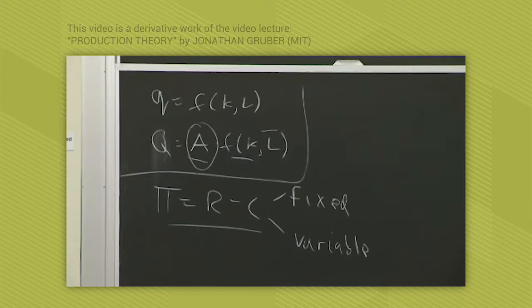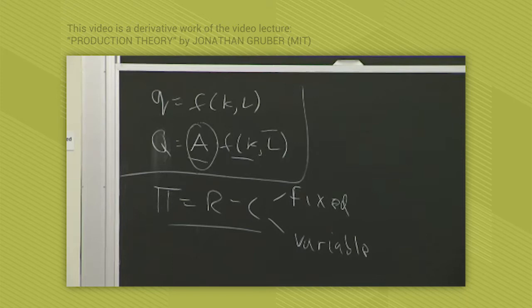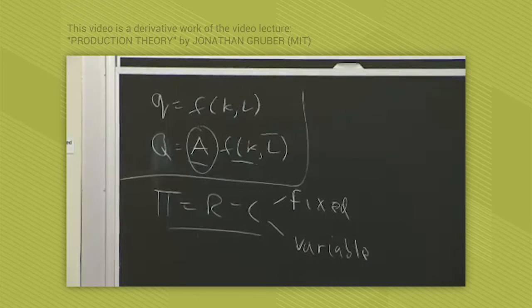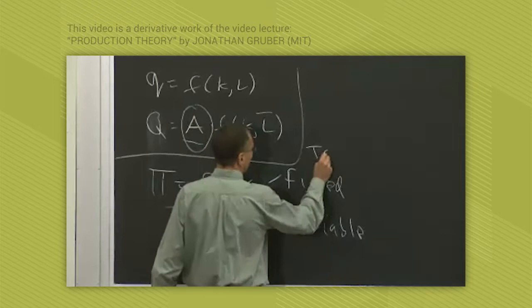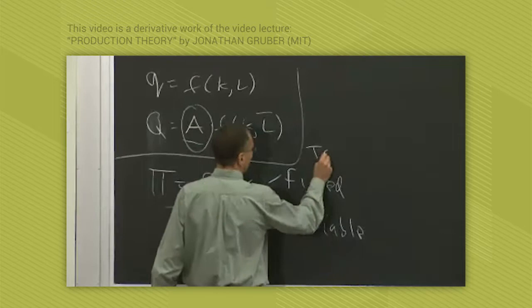Variable costs, so that's like capital in the short run. Variable costs are the costs of goods that can vary in the short run. That's like labor. And total costs is the sum of these two. So total costs equals fixed costs plus variable costs.